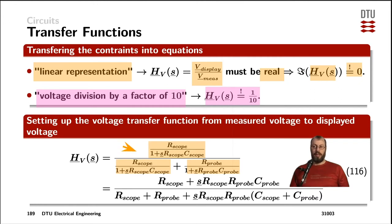We can again simplify by multiplying with the 1 plus SRC components here. And that holds for both of the impedances in the denominator. The 1 plus SR scope C scope up here cancels out. And what is left is the R scope multiplied with the 1 plus SR probe times C probe, resulting in our final numerator. In the denominator, we just cross multiply from the denominators of the individual impedances to the numerators. And we can sort the real parts and the imaginary parts.